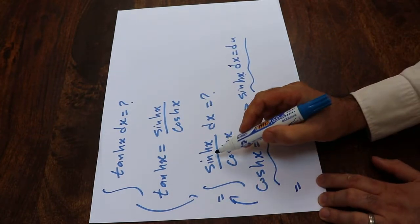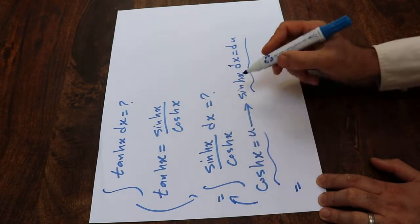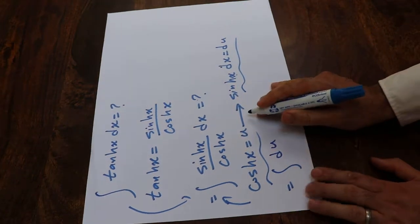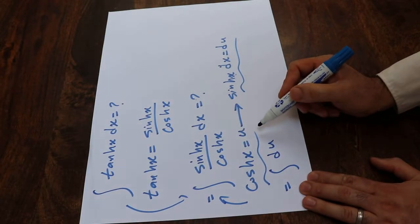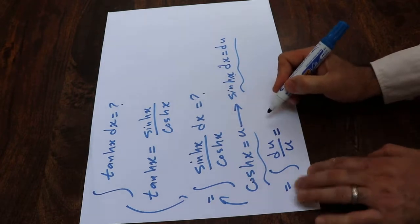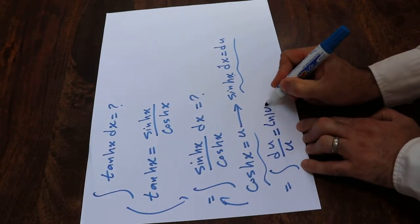Instead of hyperbolic sine x dx, I write du, and instead of hyperbolic cosine x, I write u. The integral of du over u equals ln u plus c.